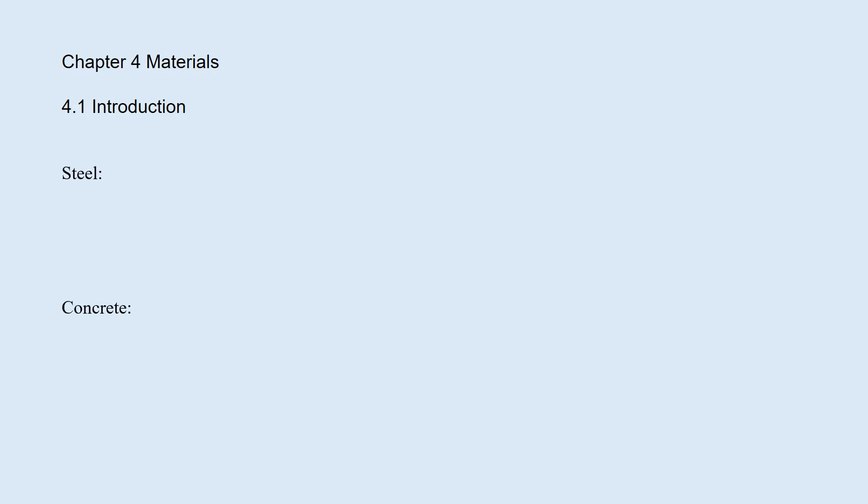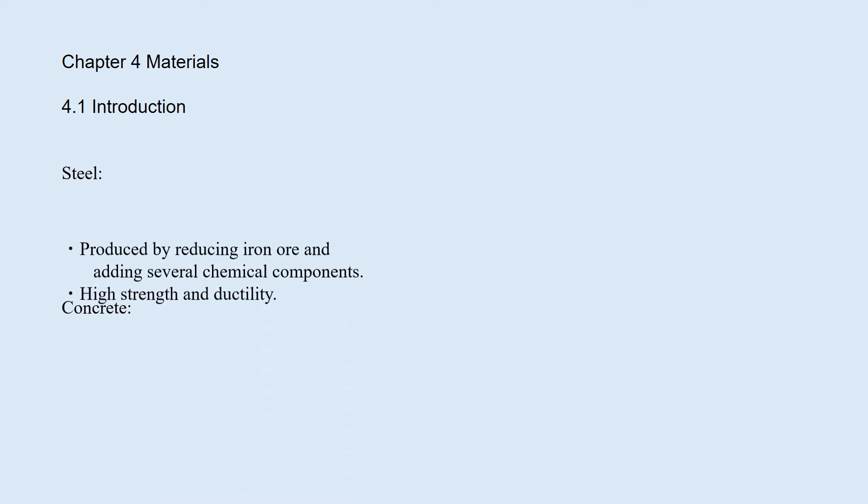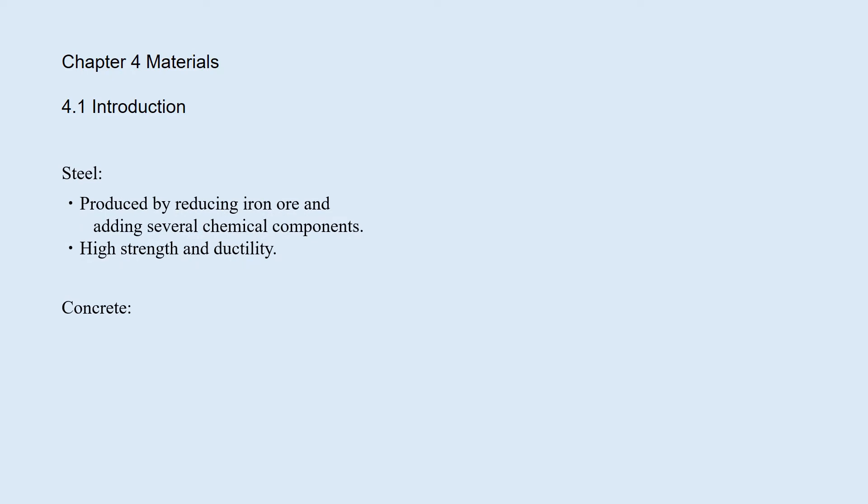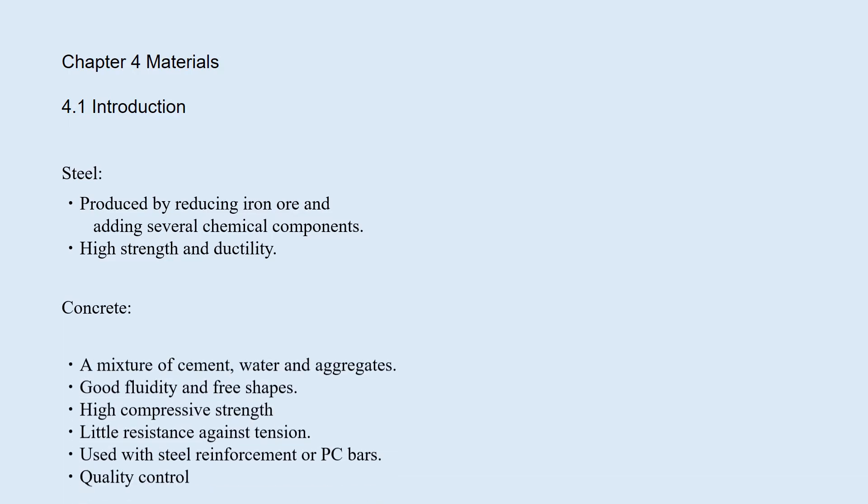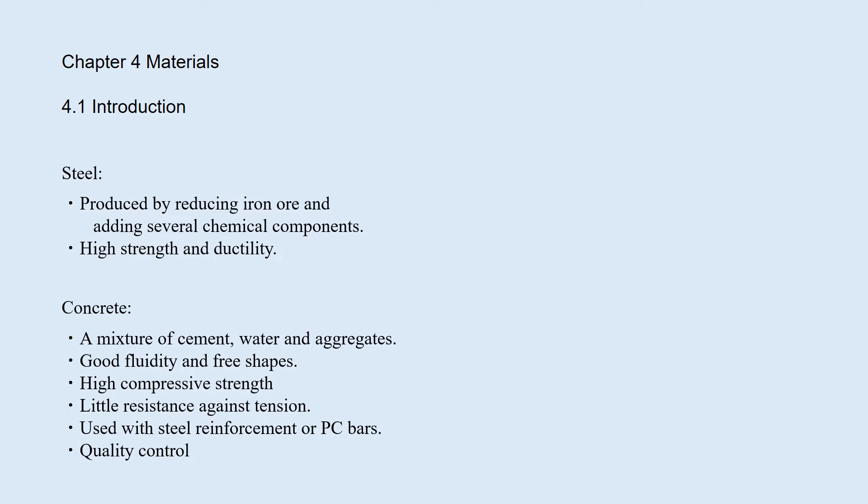Steel and concrete are most commonly used for modern bridges. Steel is produced by reducing iron ore and adding several chemical components. Steel has high strength and ductility and is suitable for bridges. Concrete is a mixture of cement, water, and aggregates.